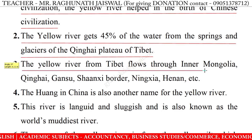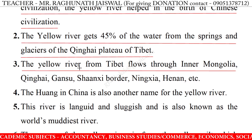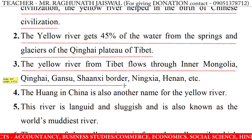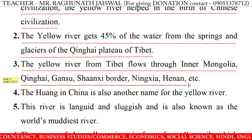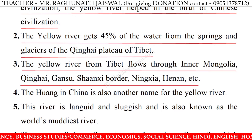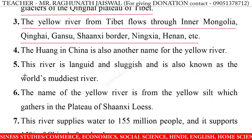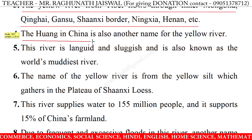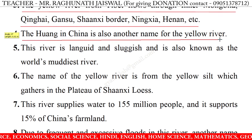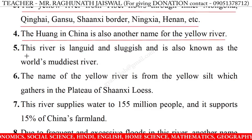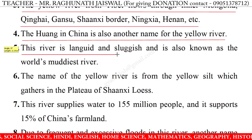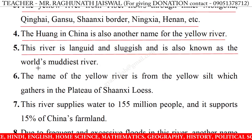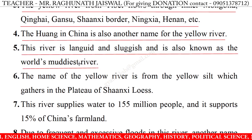3. The Yellow River from Tibet flows through Inner Mongolia, Qinghai, Gansu, Ningxia, Henan, etc. 4. The Huang in China is also another name for the Yellow River. 5. This river is languid and sluggish and is also known as the world's muddiest river.